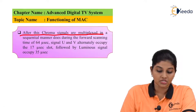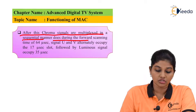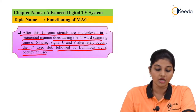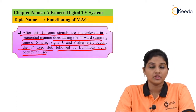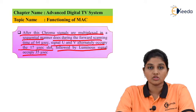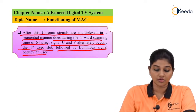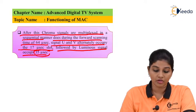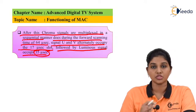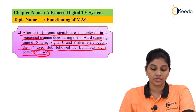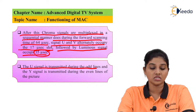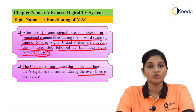After compression, the chroma signals are multiplexed sequentially. During the forward scanning time of 64 microseconds, the U and V signals alternately occupy a 17 microsecond slot, followed by the luminance signal occupying a 35 microsecond slot. The U signal is transmitted during the odd line and the V signal is transmitted during the even line. The Y signal refers to the luminance signal in this context.